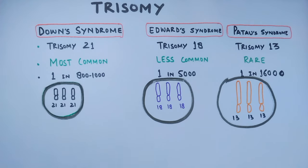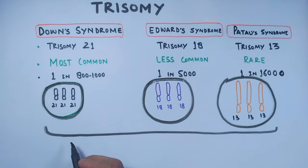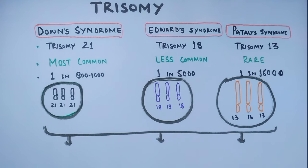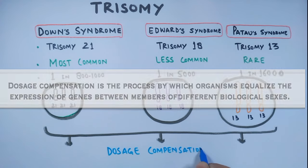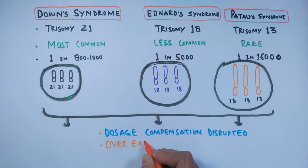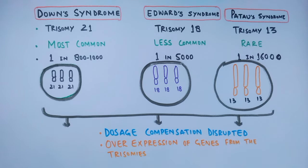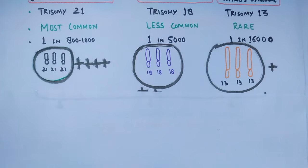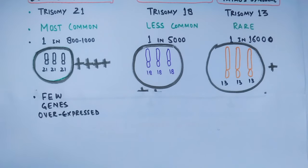The first question is: how do these trisomies cause genetic disorders — what problem do three copies pose in the cell? It all depends upon dosage compensation. Simply put, dosage compensation is disrupted by the extra copy of the chromosome within the cell, because there is overexpression of genes from the trisomies.